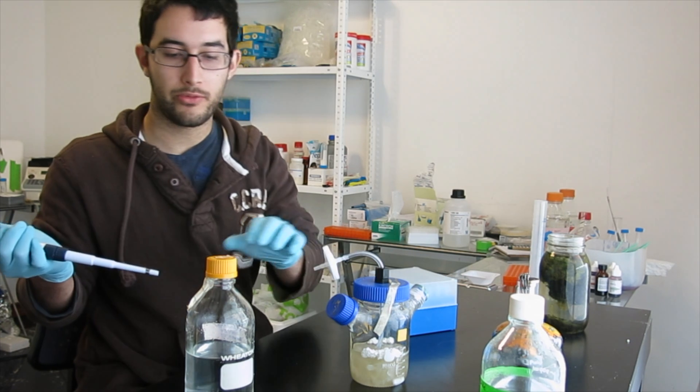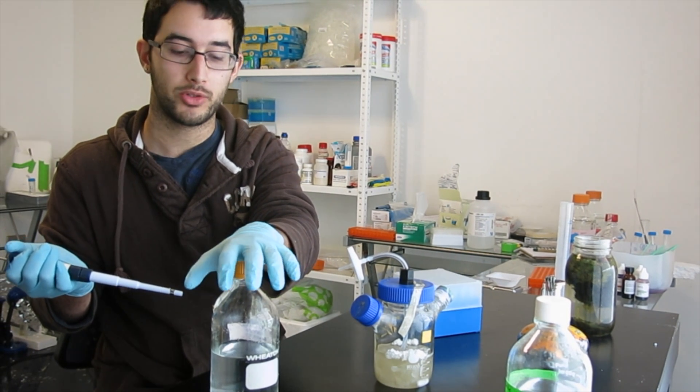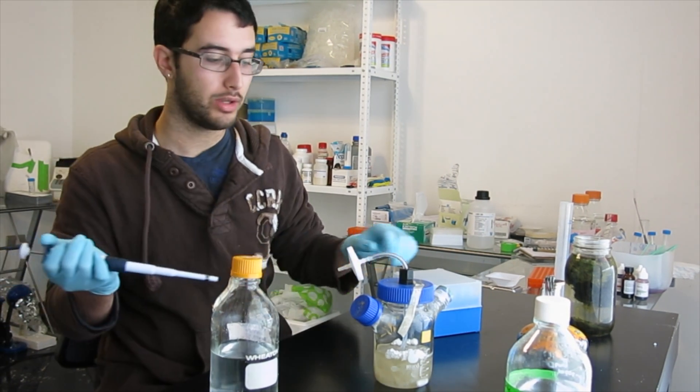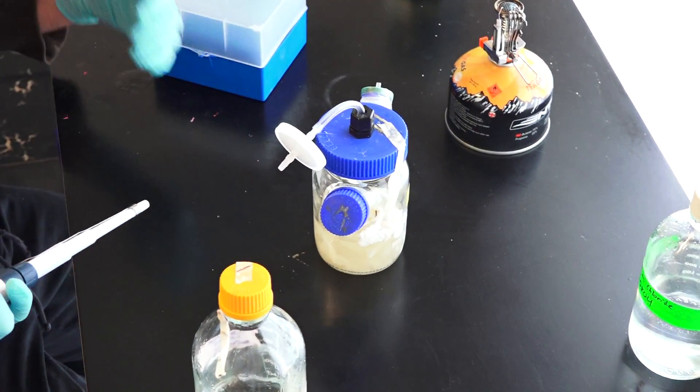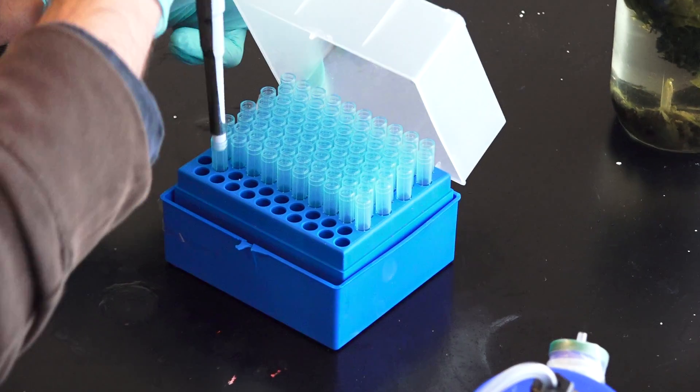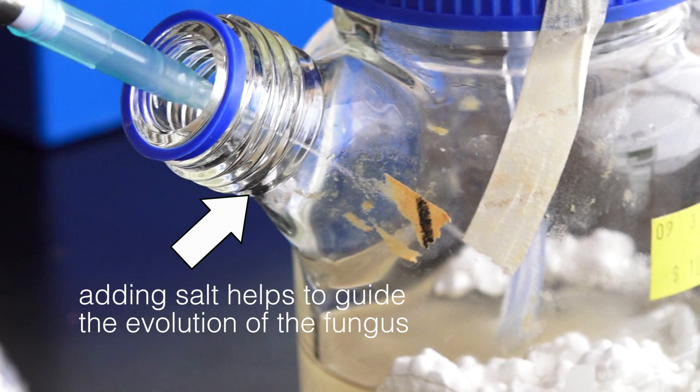Right now I have a bottle of sterile seawater which we collected from the ocean and sterilized in our little autoclave. And so every morning I add two milliliters of this to my bioreactor so that I can slowly increase the salt concentration and eventually make the fungi able to survive in the ocean.